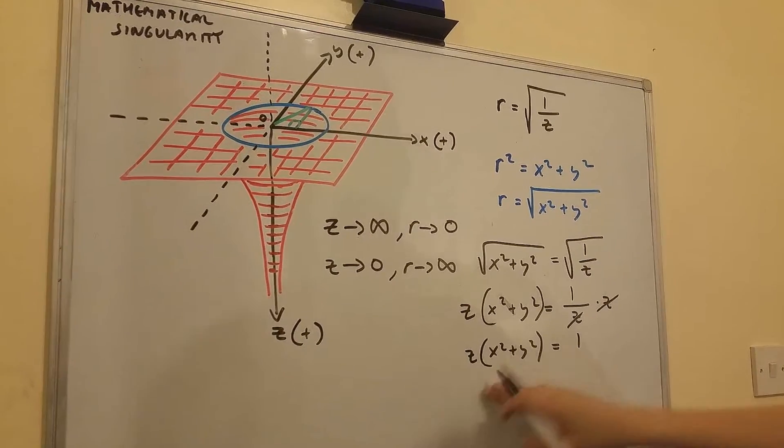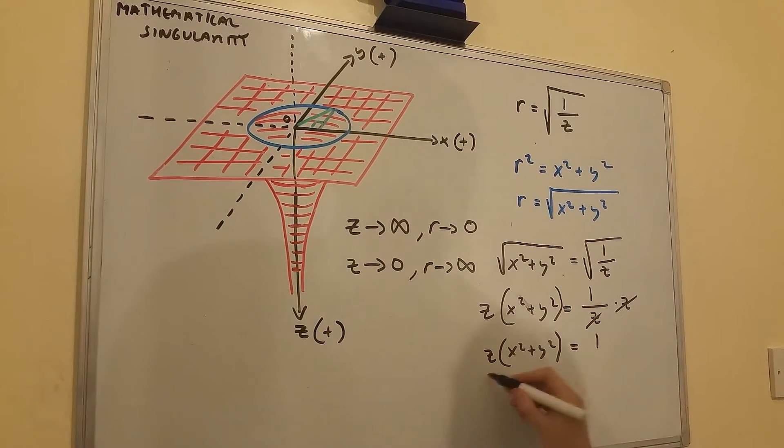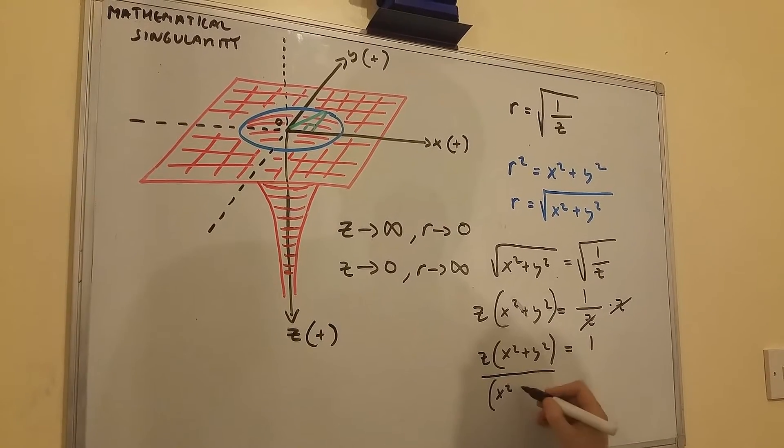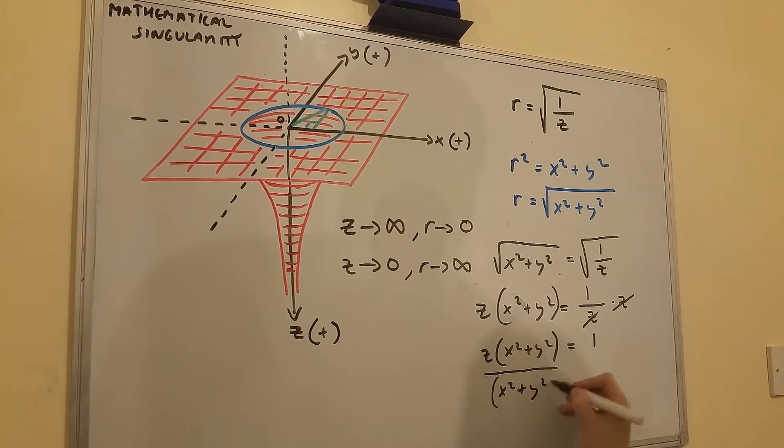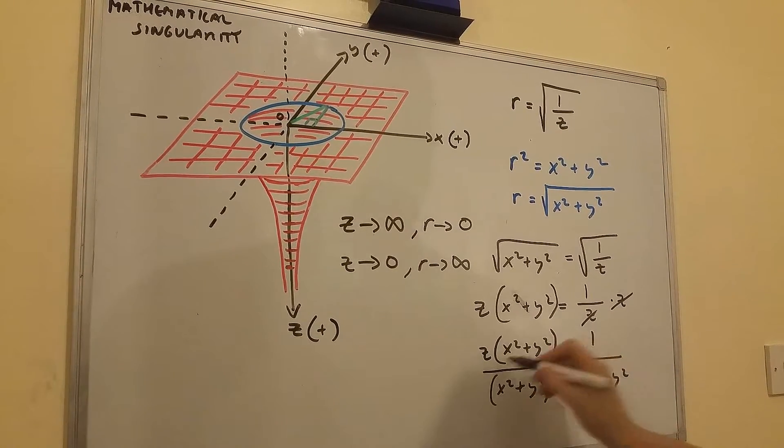Now I'm going to divide both sides of this equation by x squared plus y squared.